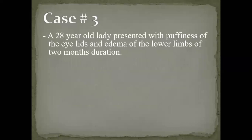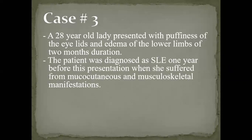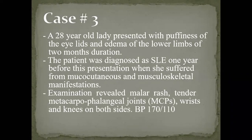The third case is a 28-year-old lady presenting with puffiness of the eyelids and edema of the lower limbs of two-month duration. The patient was diagnosed with systemic lupus one year ago and had mucocutaneous and musculoskeletal manifestations since then. Examination shows malar rash, tender metacarpophalangeal joints, wrists, and knees, and the new finding that blood pressure is elevated at 170 over 110.